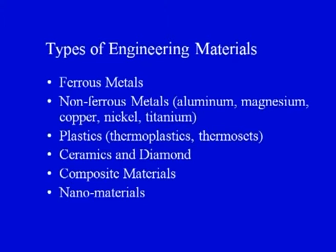This slide was covered in lecture number 1 — the types of engineering materials available. On screen we have ferrous metals, non-ferrous metals such as aluminum, magnesium, copper, nickel, plastics such as thermoplastics and thermosets, other materials such as ceramics and diamond, composite materials, and nano materials. There is a large variety of engineering materials available, and these are just the family names. Within these families there can be a large variety of subgroups, which can further be divided into many more types of materials.